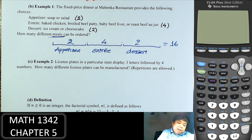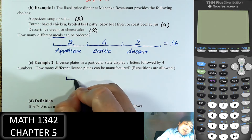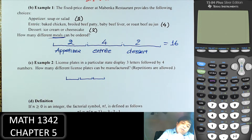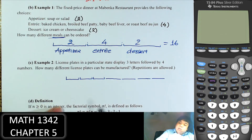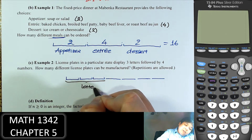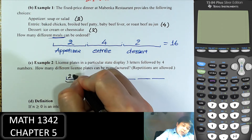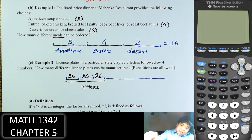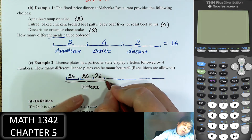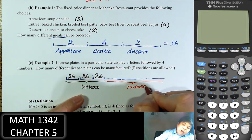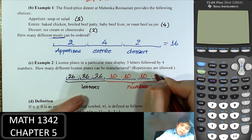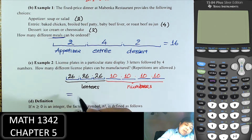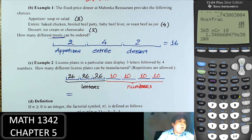Next example: a license plate in a particular state displays three letters followed by four numbers. For letters, there are 26, so we can choose 26 for each of the three positions. For numbers, there are 10 digits from 0 to 9. So put all of them together: the total will be 26 cubed times 10 to the fourth power.